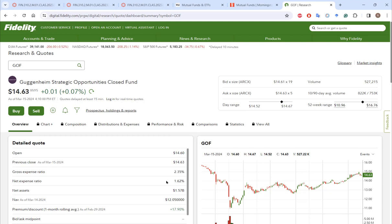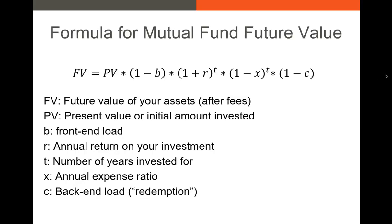How do we calculate the amount you'll have at the end of an investment period given different fee types? We use this equation: take the present value — the starting amount you're investing — multiply by one minus the front-end load, times one plus the annual return to the power of T years, times one minus the expense ratio to the power of T years, all multiplied by one minus the back-end load. That gives you the future value of your mutual fund investment.